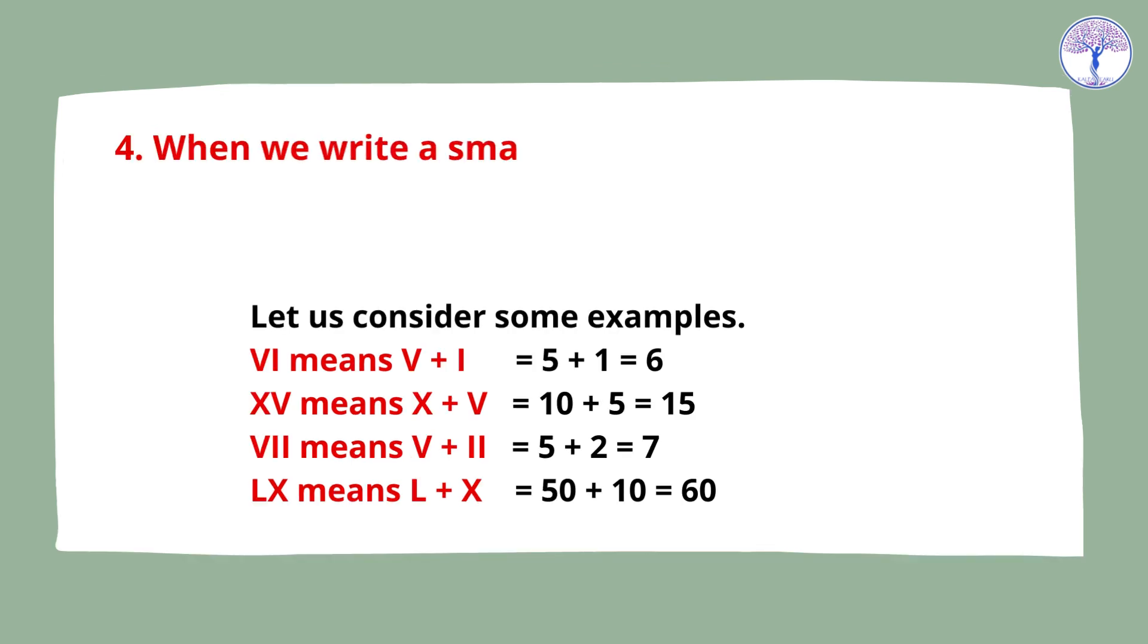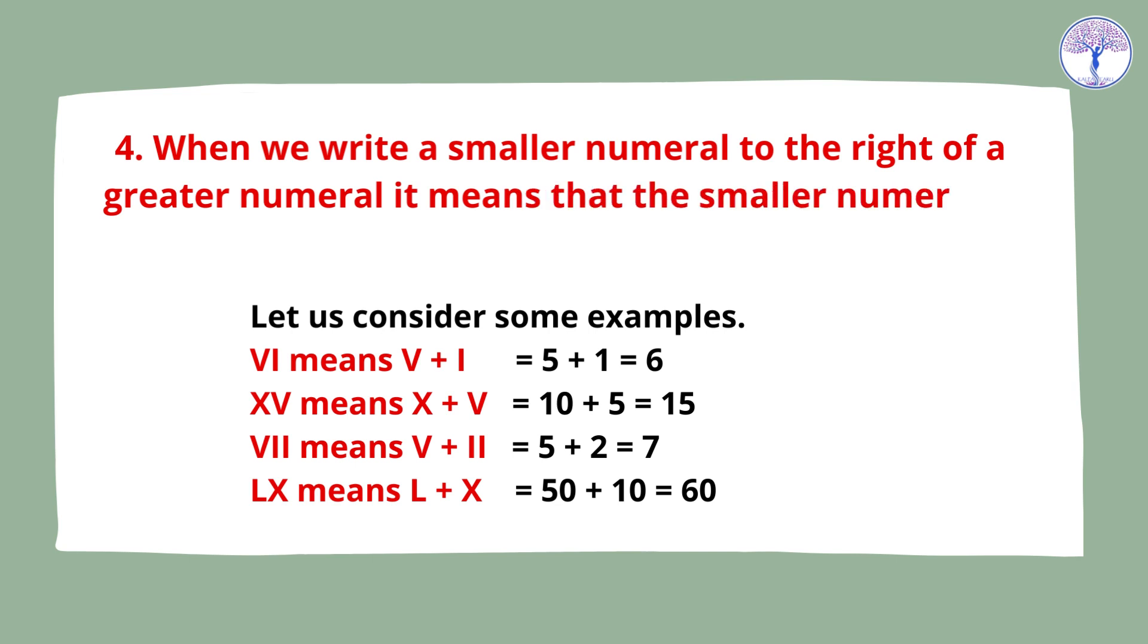Rule 4: When we write a smaller numeral to the right of the greater numeral, it means that the smaller numeral is added to the greater one. Let us consider some examples: VI means V plus I equals 5 plus 1 equals 6. XV means X plus V equals 10 plus 5 equals 15. VII means V plus II equals 5 plus 2 equals 7. LX means L plus X equals 50 plus 10 equals 60.